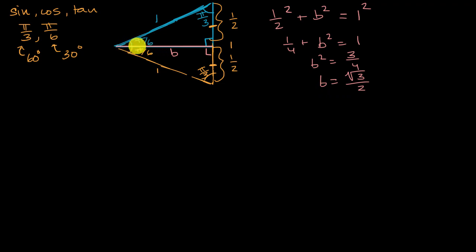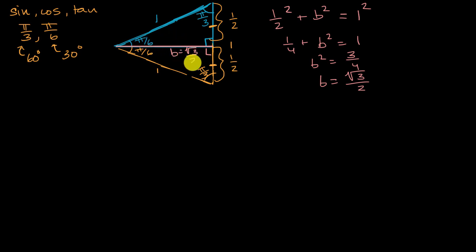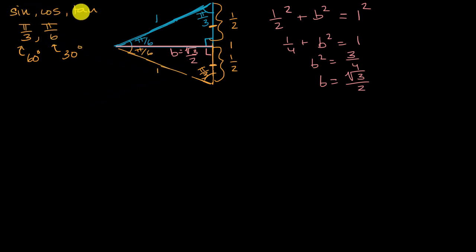Just like that, we've figured out all the side lengths of this 30-60-90 triangle. b is equal to square root of three over two. Now I said this would be useful as we go into the unit circle definitions of sine, cosine, and tangent, and we're about to see why.